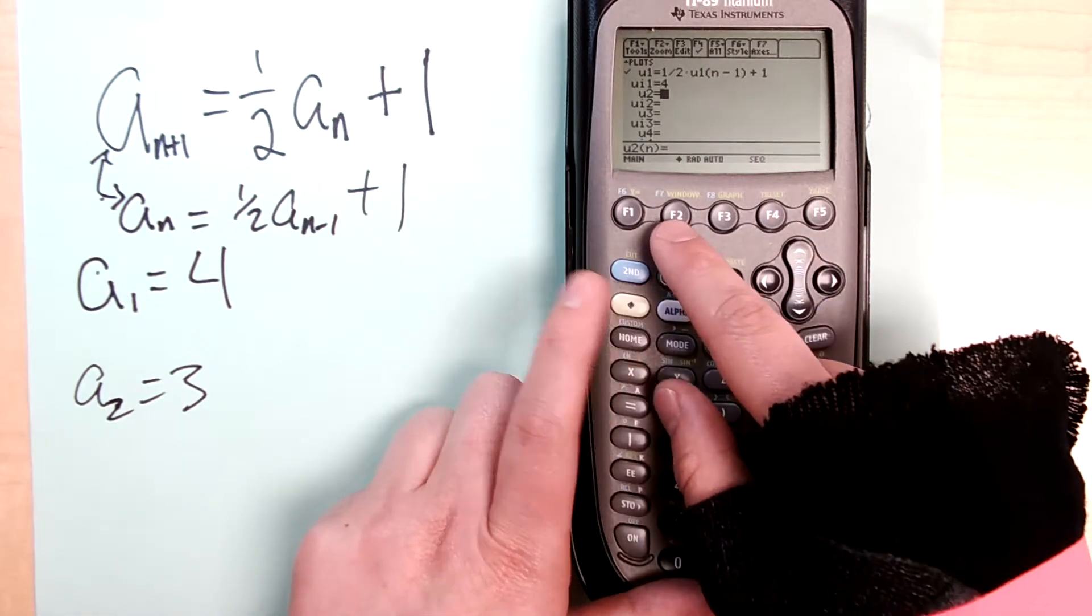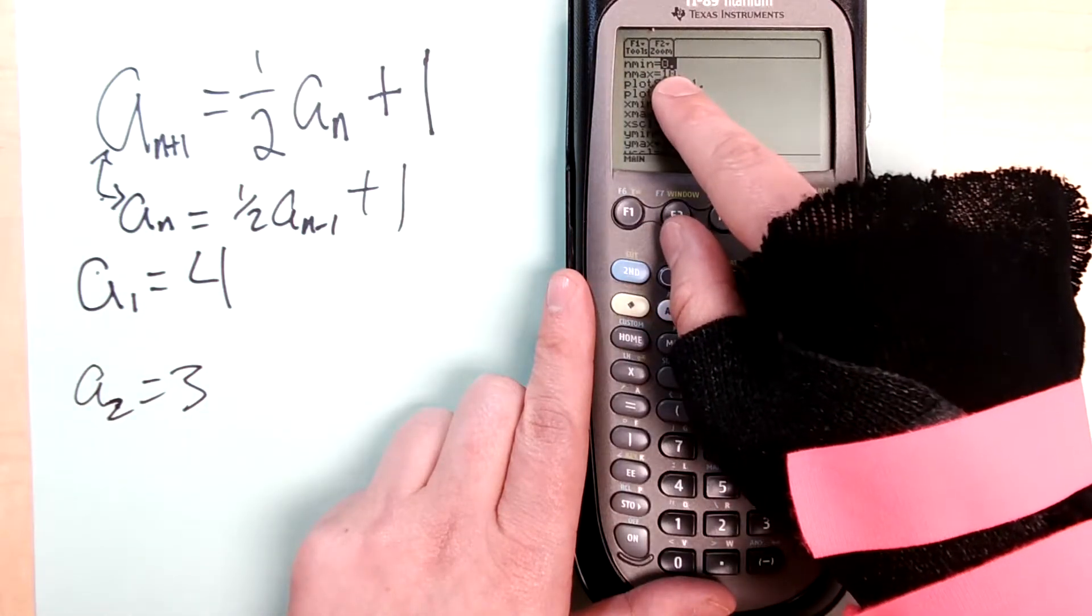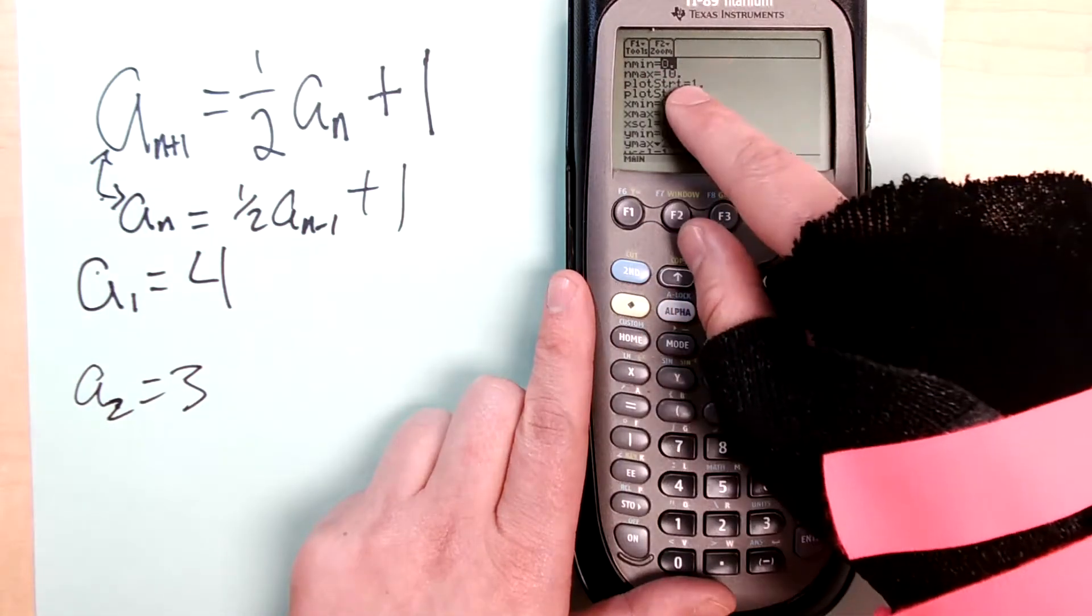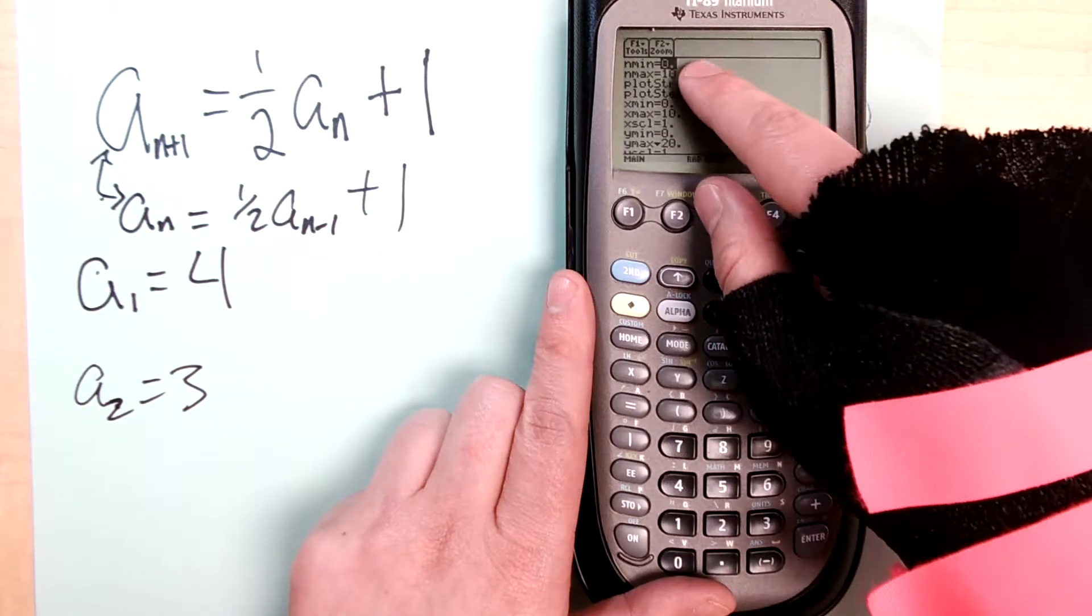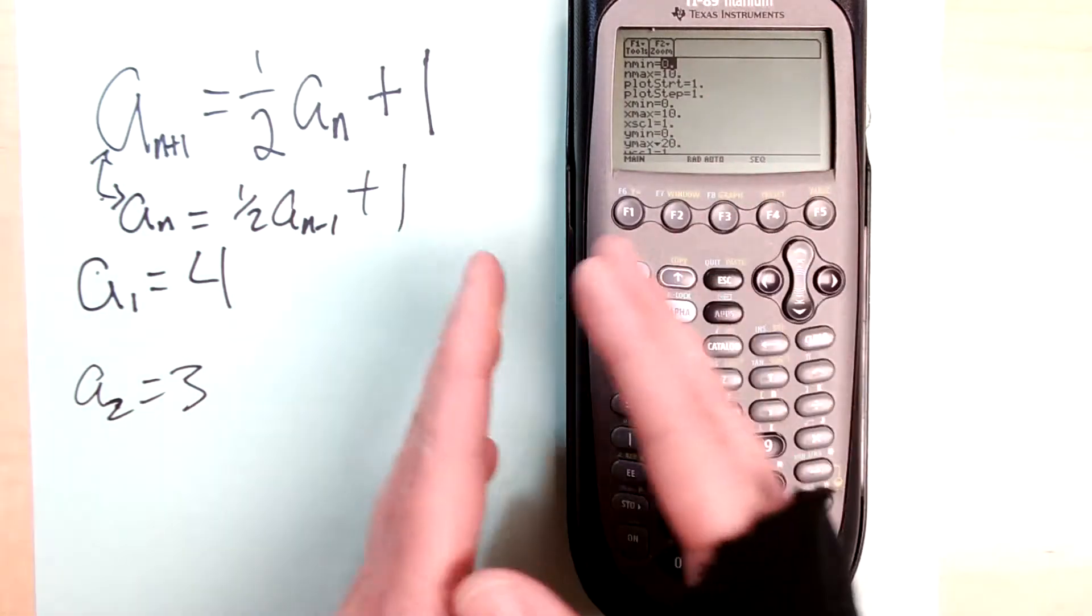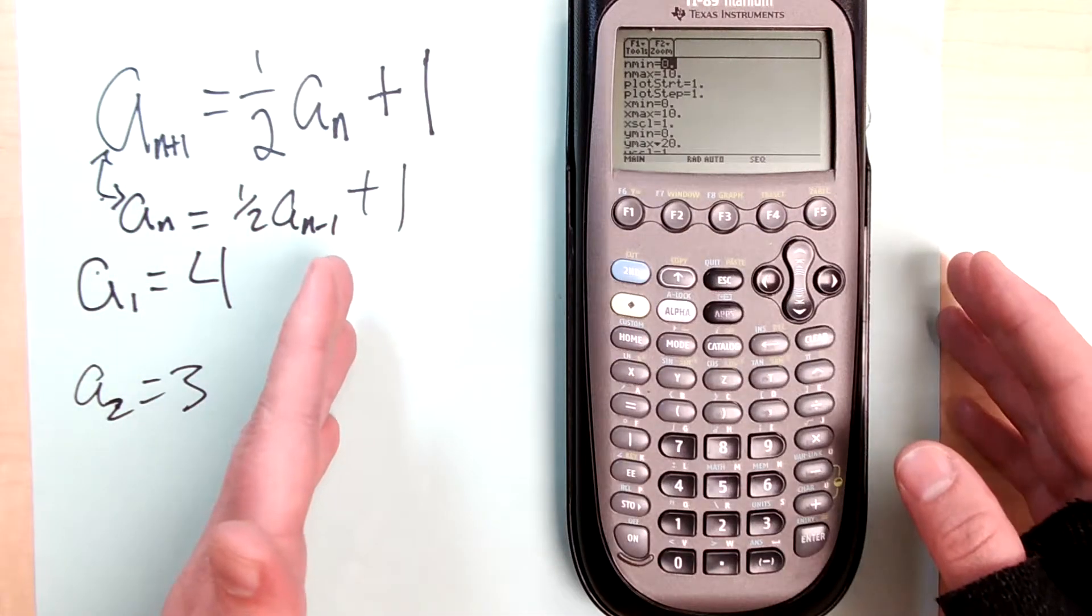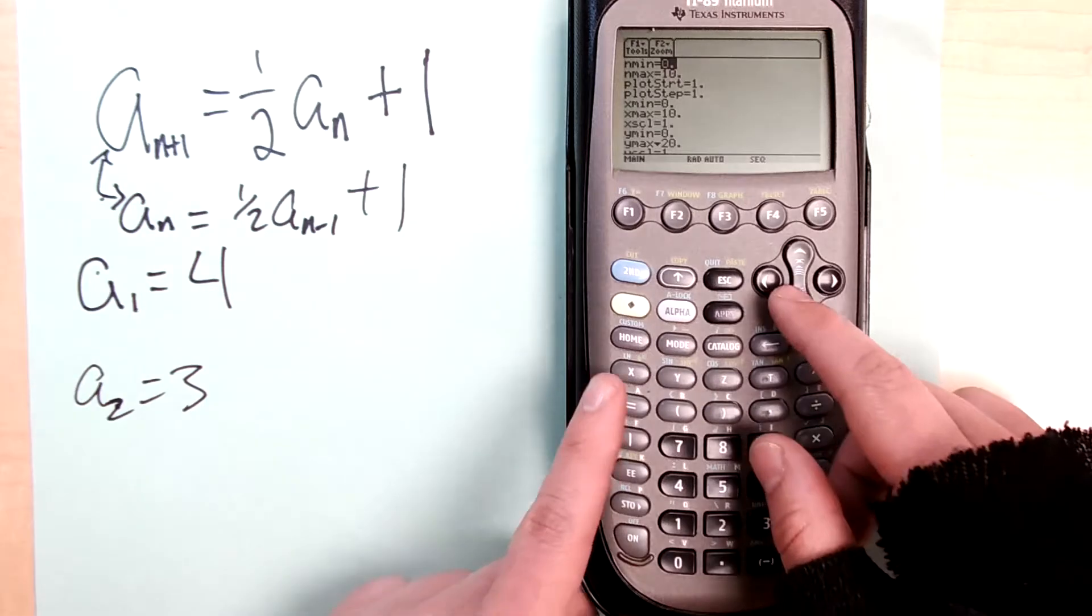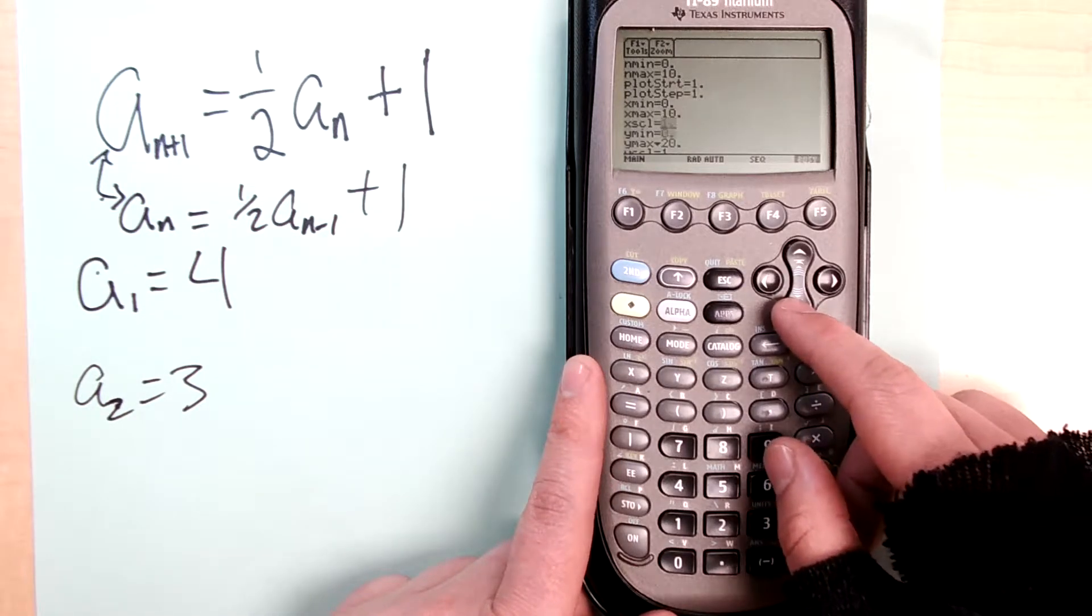Let's do diamond window. What is the n min that I want to start with and what's its max? Also, the x min and max should match up with the n min and max because the x min and max is going to be the scale for your horizontal, and that's pretty much what your steps are going to look like for your sequence.